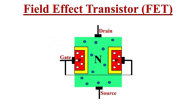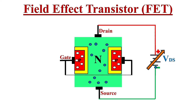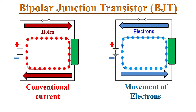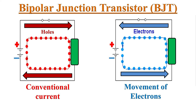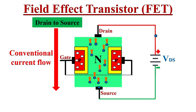In an N-channel JFET, if we want to flow conventional current from drain to source, we apply a voltage VDS between drain and source terminals — drain should be positive with respect to source. Once we apply VDS, the electrons will start flowing from the source terminal to the drain terminal. If we increase VDS, the rate of flow of electrons will increase, meaning the flow of current increases. The conventional current flows from drain to source terminal.